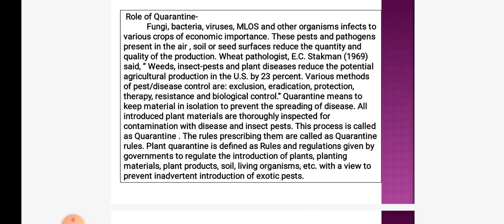Next we will see the role of quarantine. Fungi, bacteria, viruses, nematodes, and other organisms infect various economically important crop plants. These pests and pathogens present in air, soil, or on seed surfaces reduce the quantity and quality of production. Plant pathologist E.C. Stakman said weeds, insect pests, and plant diseases reduce potential agricultural production in the U.S. by 23%. Various methods of disease control are exclusion, eradication, protection, therapy, resistance, and biological control.